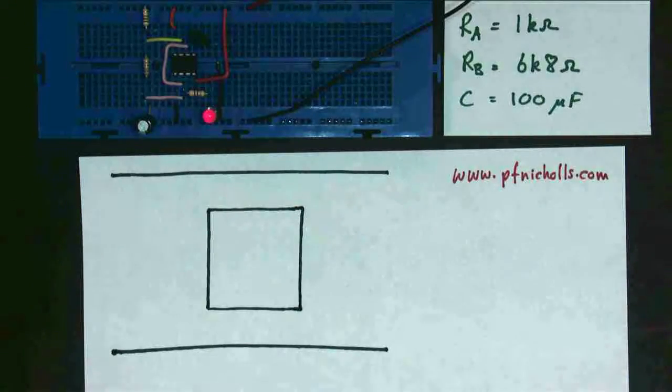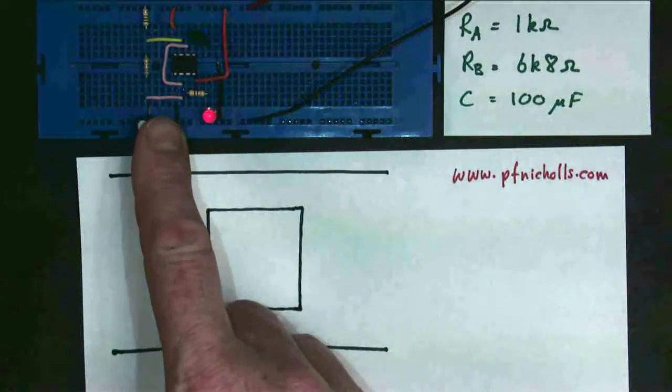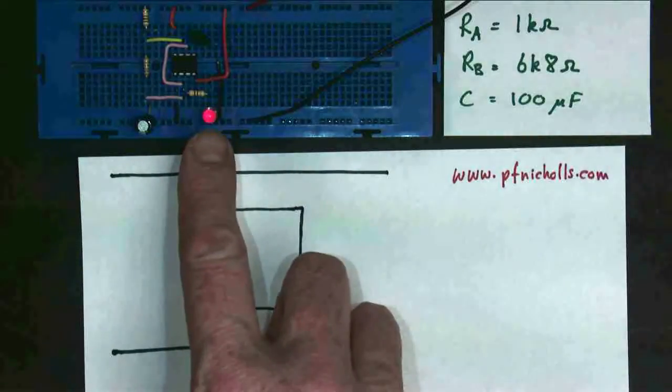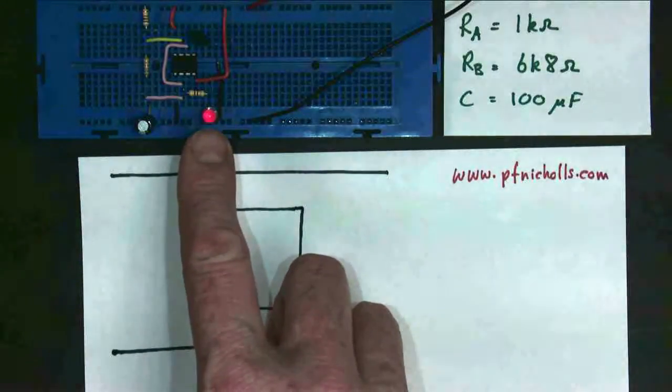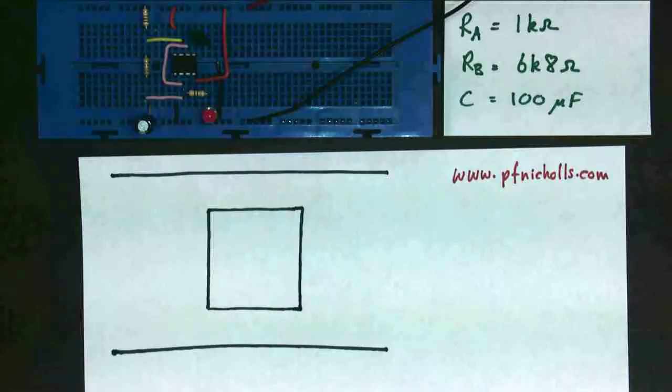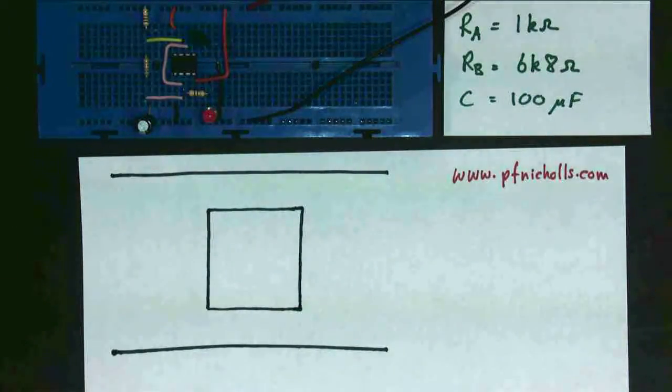This video is looking at an A-stable circuit. I've built one just here. A-stable means that when it's on, it wants to go off. When it's off, it wants to go on. It can't decide what to do. It's never stable. That's what A-stable means.